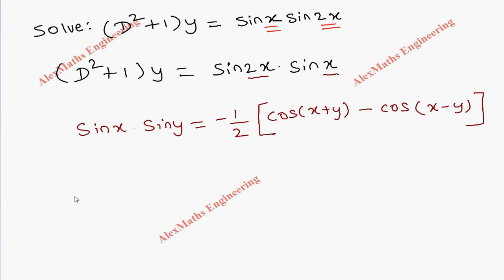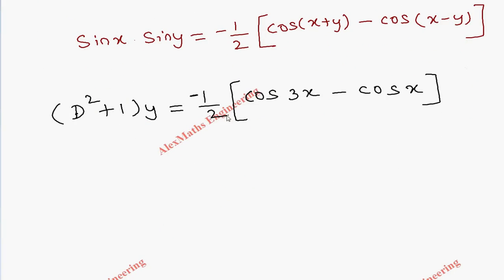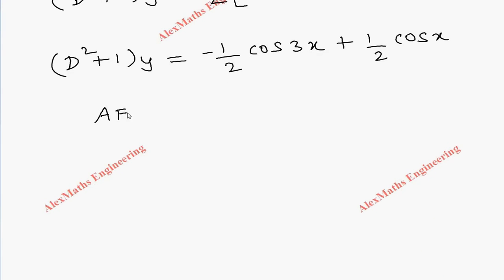So (D² + 1)y equals negative one-half times bracket open: cos of the sum of both angles, giving cos 3x, minus cos of the difference, 2x minus x, which is cos x. Distributing the minus one-half, we get: (D² + 1)y = minus one-half cos 3x plus one-half cos x.